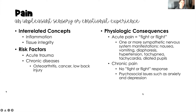The interrelated concepts to pain are inflammation and tissue integrity, because with acute pain we do have some disruption in tissue integrity. Risk factors for acute pain include trauma — motor vehicle accidents, motorcycle accidents, falls, anything that traumatizes the body. Chronic pain can come from chronic diseases like osteoarthritis, cancer, or low back injury — conditions that tend to take on a more persistent nature.